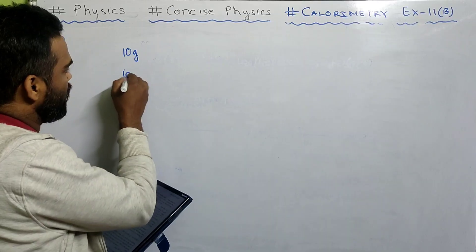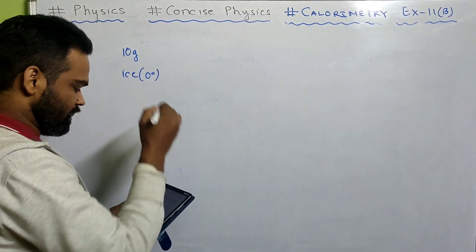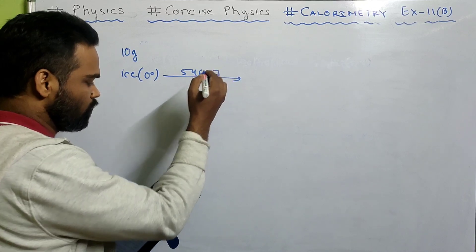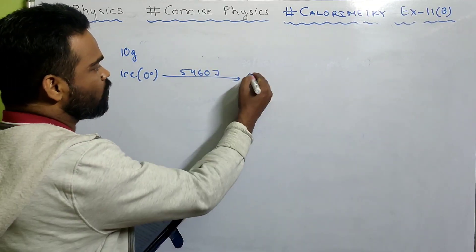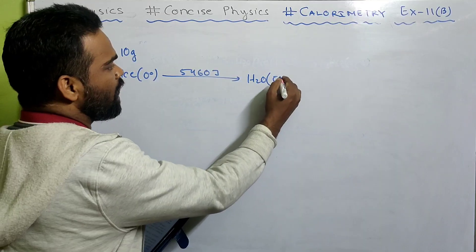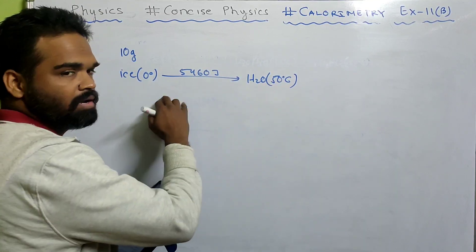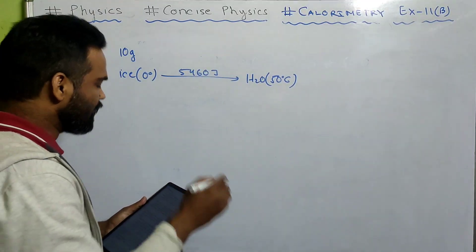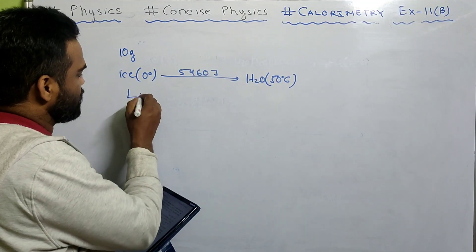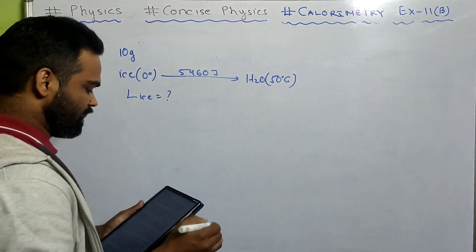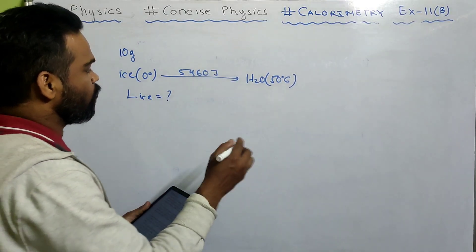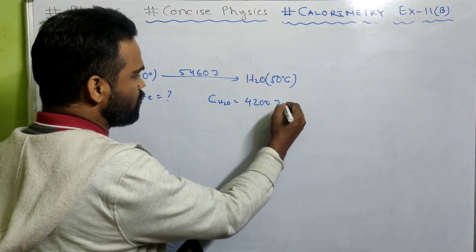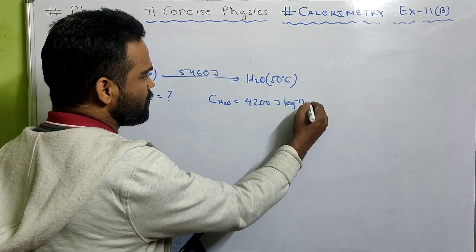Problem 1: 10 grams of ice at 0 degree centigrade absorbs 5460 joule of heat energy to melt and change to water at 50 degree centigrade. Calculate the specific latent heat of fusion of ice, L of ice, given the specific heat capacity of water, C of water, is 4200 joule per kg per kelvin.